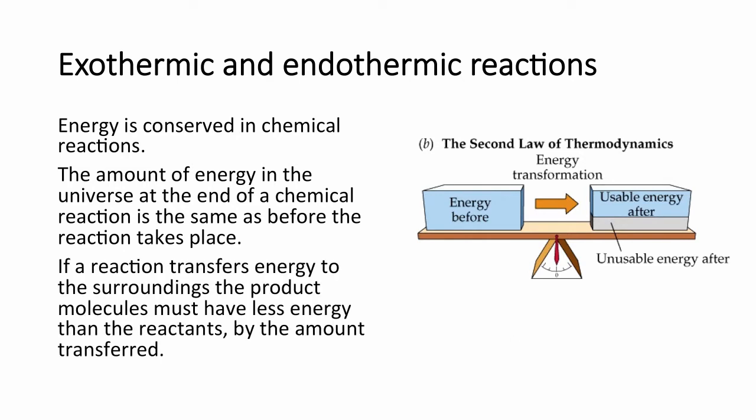If a reaction transfers energy to the surroundings, the product molecules must have less energy than the reactants by the amount transferred. For example, if we had a chemical reaction with so much energy before and afterwards, we have energy that's been transferred, such as heat or light, then they must have less usable energy after the reaction. Therefore, the chemical energy must have gone down.